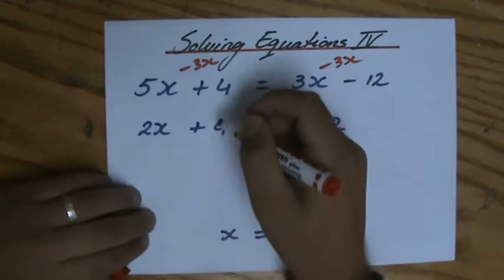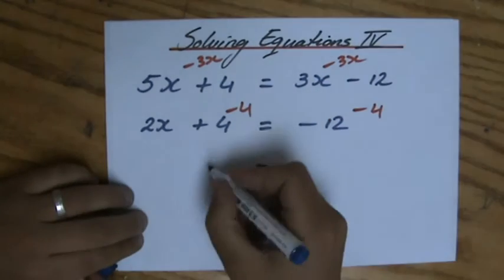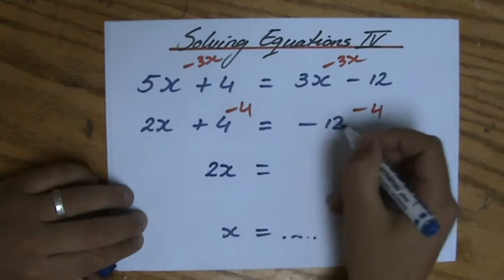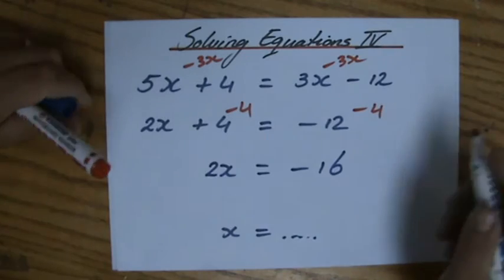2X plus 4 equals minus 12. Take away that 4 there, because you don't want that 4 over there, because you only want X's there. Minus 12, minus 4. Don't let those negative signs scare you. You're old enough now to deal with that.